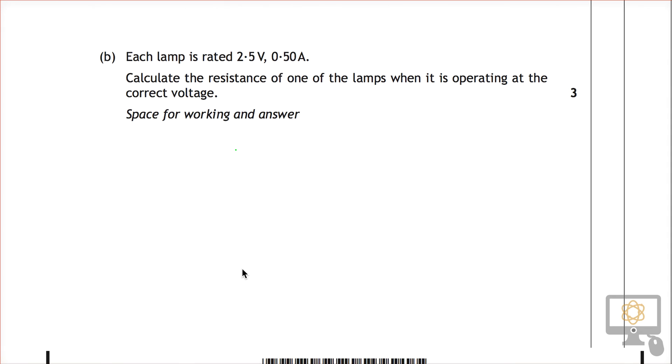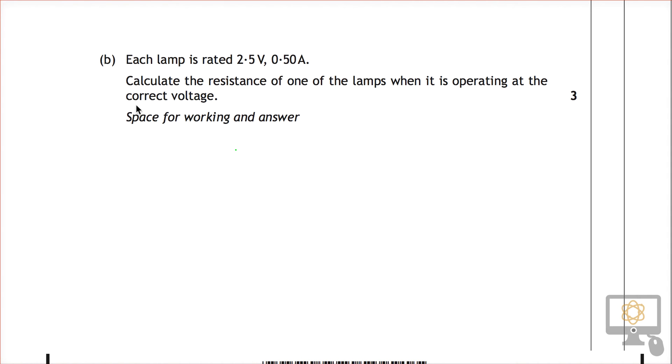I'm going to write down the key parts from the question. The voltage is 2.5 volts and the current I for one of the bulbs is 0.50 amps. Notice that both of those are two significant figures, so our answer should also be two significant figures. It says to calculate the resistance, and that's what we're trying to find out, so we want to find R.